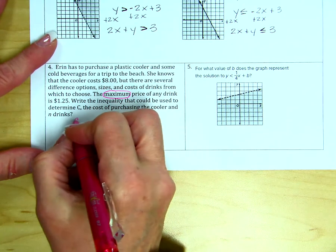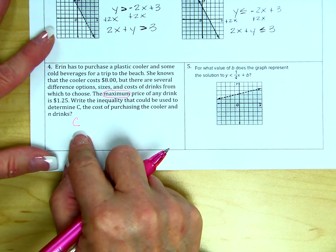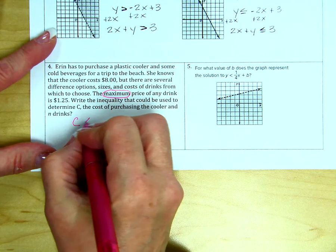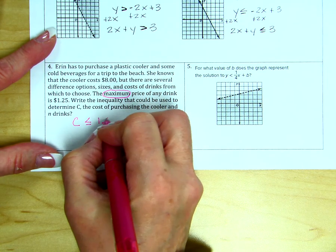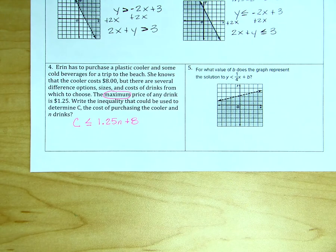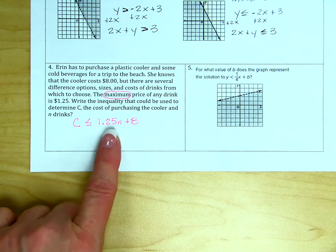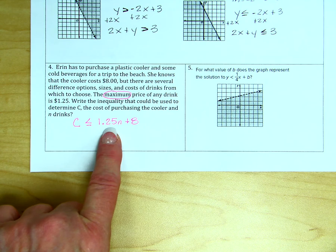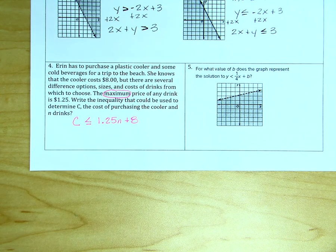So, C. C is a maximum. So, it is going to be less than or equal to $1.25 per drink plus the $8. The total cost should be either equal to this because the maximum cost for a drink was $1.25. Or it's going to be smaller than that because the cost of a drink would have been less than that.